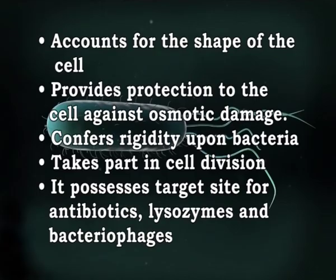The cell wall is a tough and rigid structure surrounding the bacterium like a shell. Its functions include: accounting for the shape of the cell; providing protection against osmotic damage; conferring rigidity upon bacteria; taking part in cell division; and possessing target sites for antibiotics, lysozymes and bacteriophages. The rigid part of the cell wall is peptidoglycan.